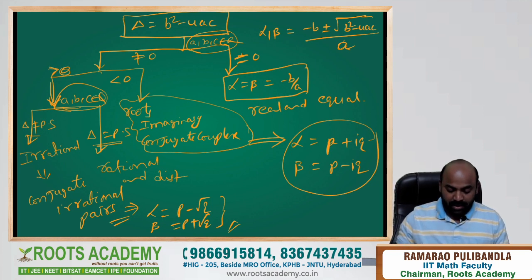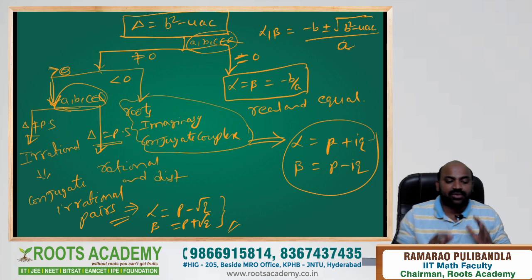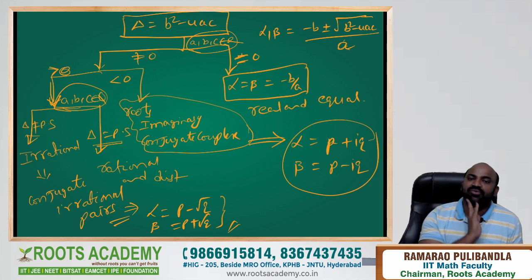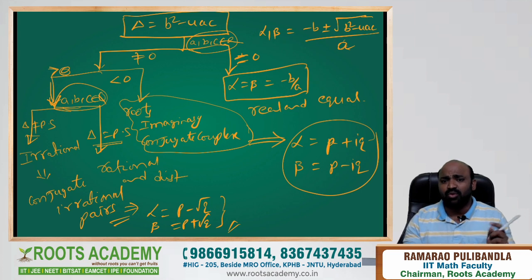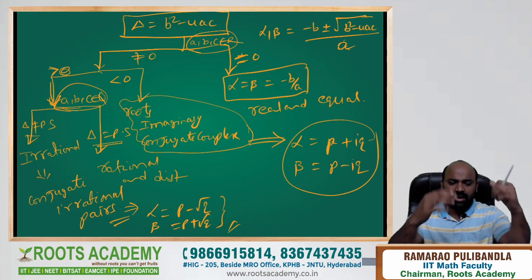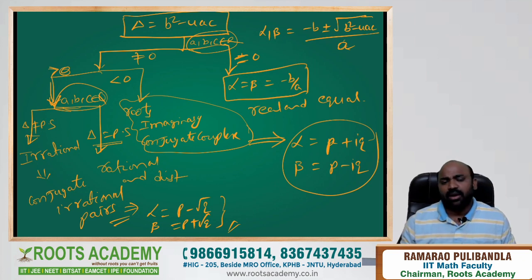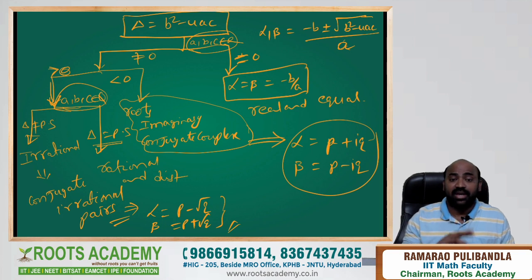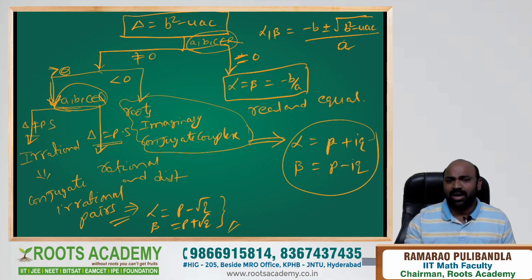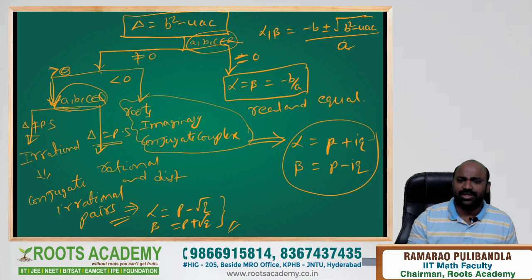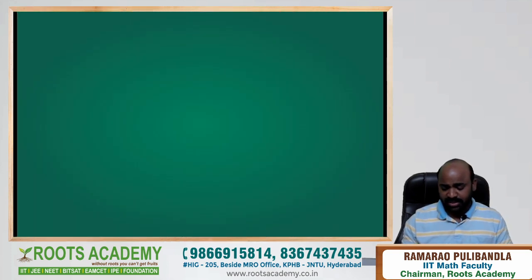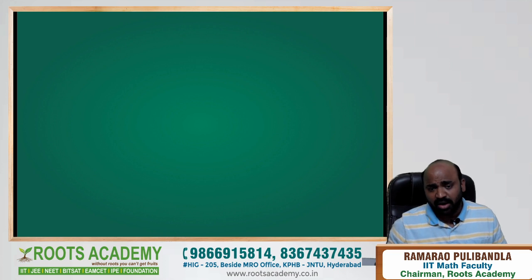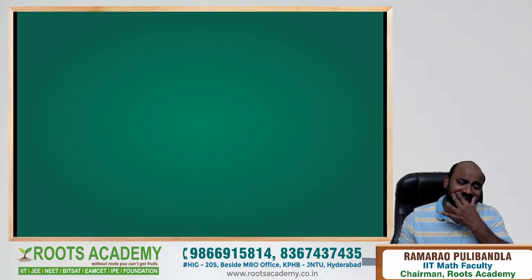Remember that the discriminant (b²−4ac) describes the nature of the roots of a quadratic equation, whereas the determinant describes the nature of two lines — whether they are intersecting, parallel, or coincident. Don't confuse these two. A number can be positive, equal to zero, or negative — analyze accordingly. Also important: if roots are conjugate complex, one root is α + ib and the other is α − ib.